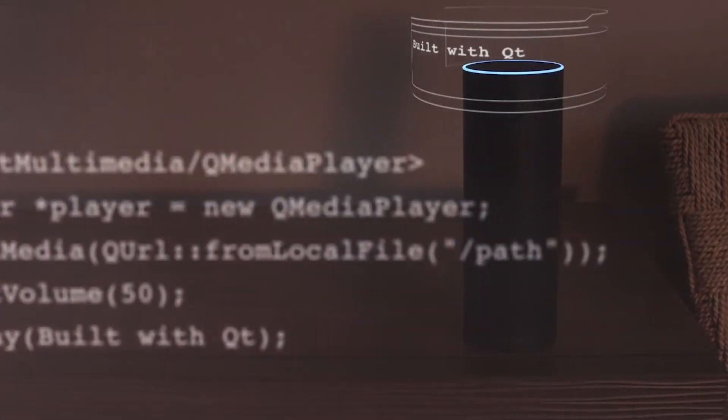Qt 5.8 is the solution for creating next generation connected devices and IoT systems. With this release we're introducing the first results of our Qt Lite project, that basically allows you to configure Qt to your exact project needs and widen your install base of devices to also lower level devices, such as wearables or Internet of Things.